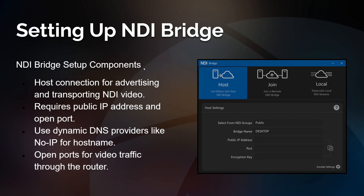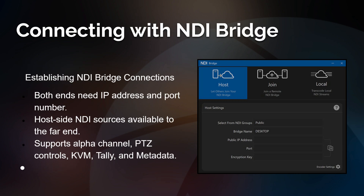If you don't have an outside IP address, you can use a dynamic DNS provider such as No-IP to get a hostname for your outside IP address. Internet service providers often don't provide an outside IP address unless you ask — unless you're a business. Dynamic DNS gives you a hostname that essentially maps to your outside IP address. Once you establish a connection on both ends, you are able to do all of the things you can do with NDI from the far end on the remote end as well.